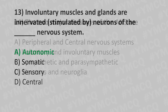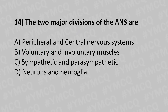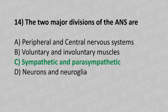Moving to our fourteenth question. The two major divisions of the ANS are: Option A: peripheral and central nervous system. Option B: voluntary and involuntary muscles. Option C: sympathetic and parasympathetic. Option D: neurons and neuroglia. And the answer is option C: sympathetic and parasympathetic.